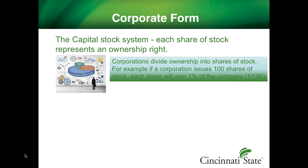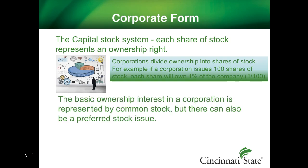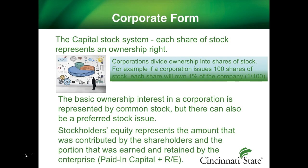For example, if a corporation issues 100 shares of stock, each share will own one percent of the company — one share over the number of shares issued. The basic ownership interest in the corporation is represented by common stock, but there can also be a preferred stock issue.